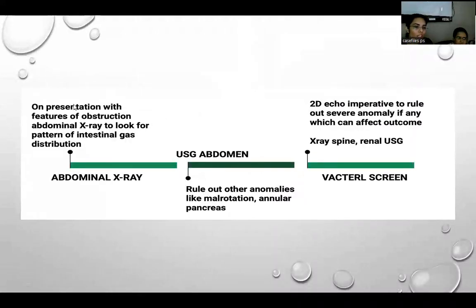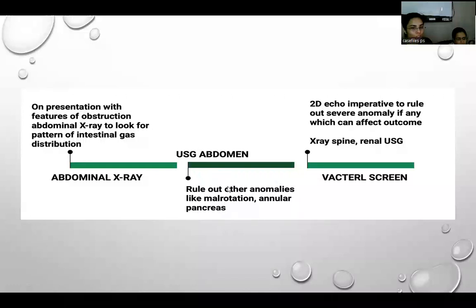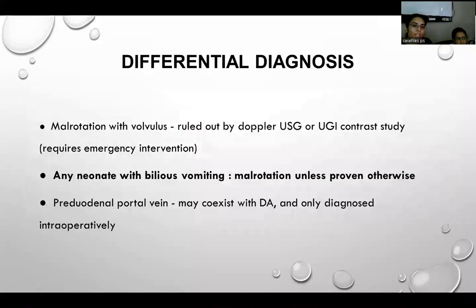When a baby arrives with clinical suspicion of distension or vomiting, a plain abdominal X-ray is done, followed by abdominal USG to rule out other vascular anomalies. For differential diagnosis, malrotation with volvulus presents with similar symptoms and can be ruled out by Doppler USG or upper GI contrast study; it requires emergency intervention.